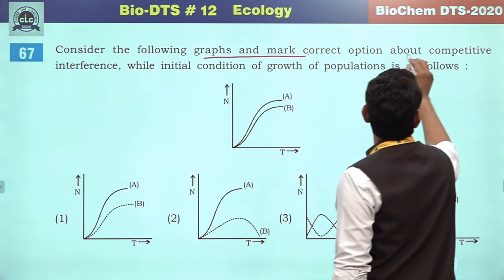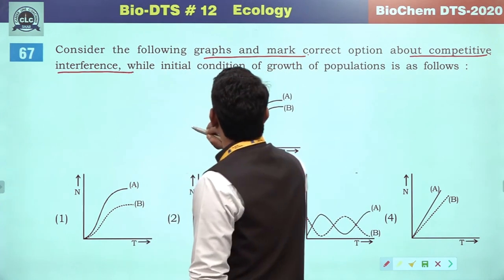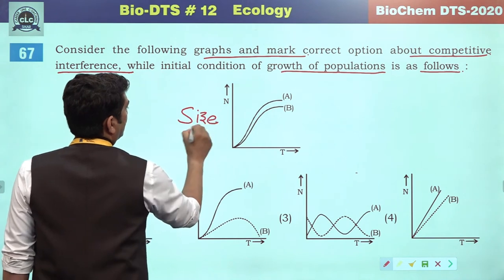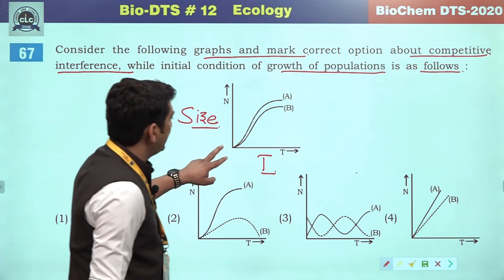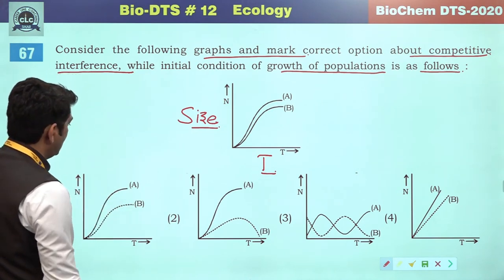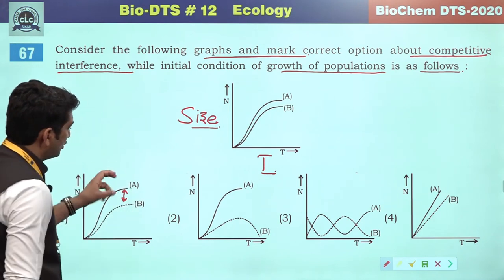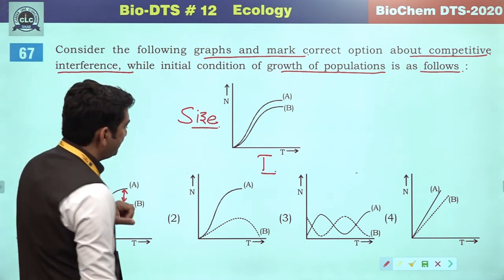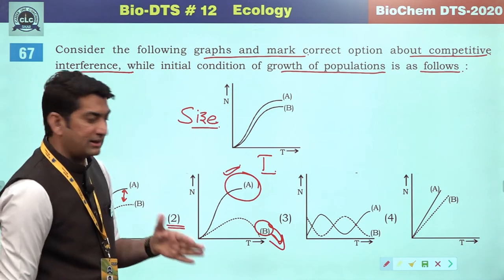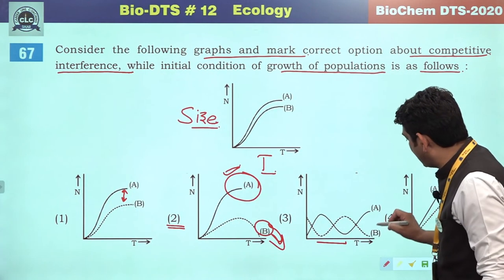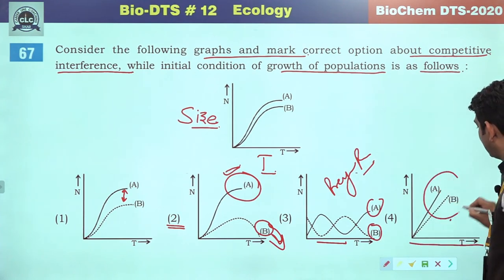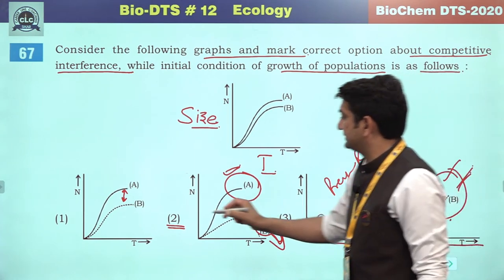Consider the following graphs about competitive interference — while looking at the initial condition of the graph, half of the population is shown. The second will be the correct answer.